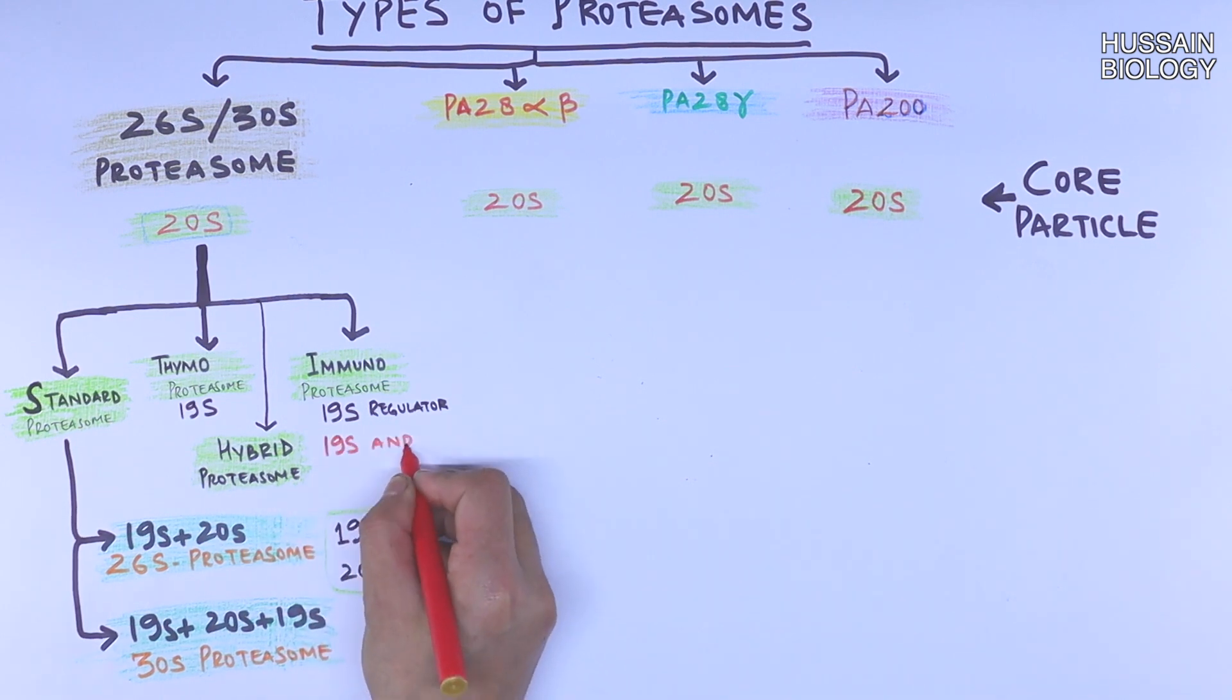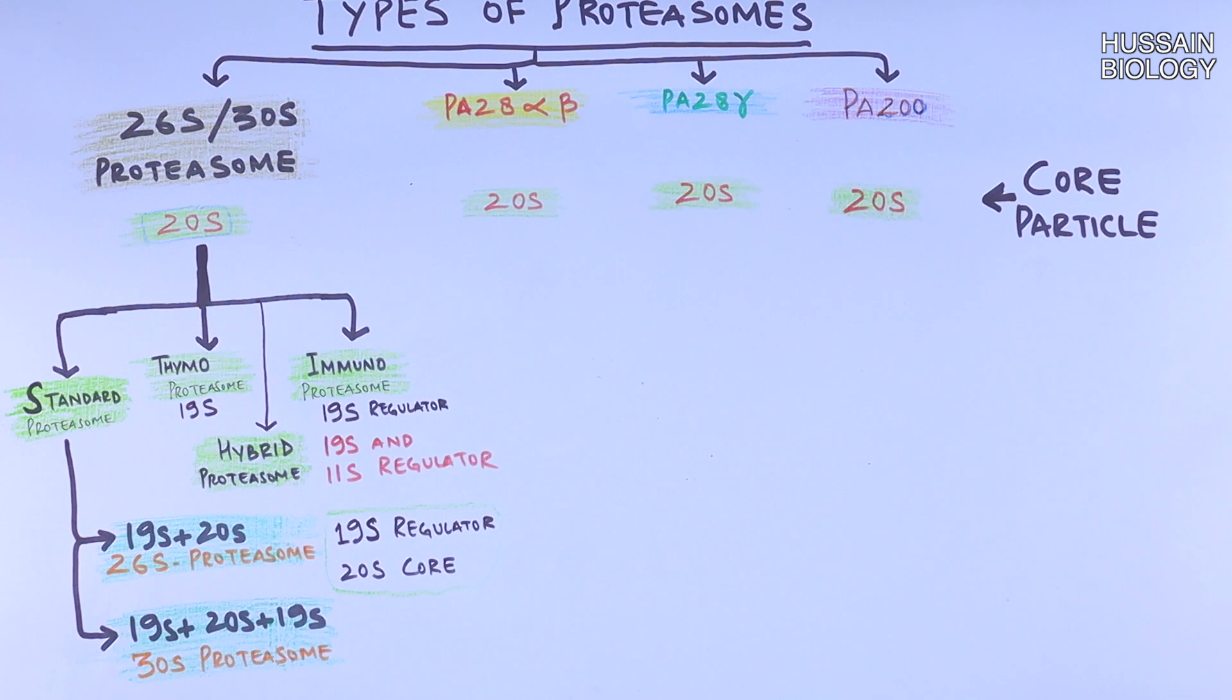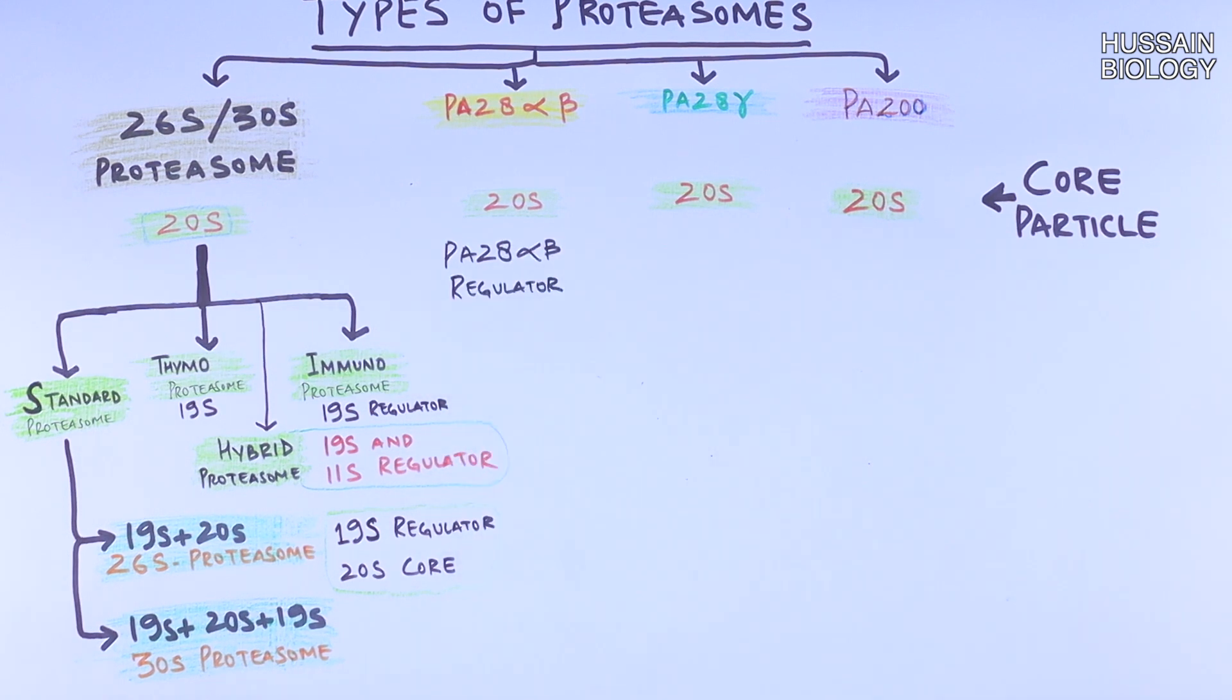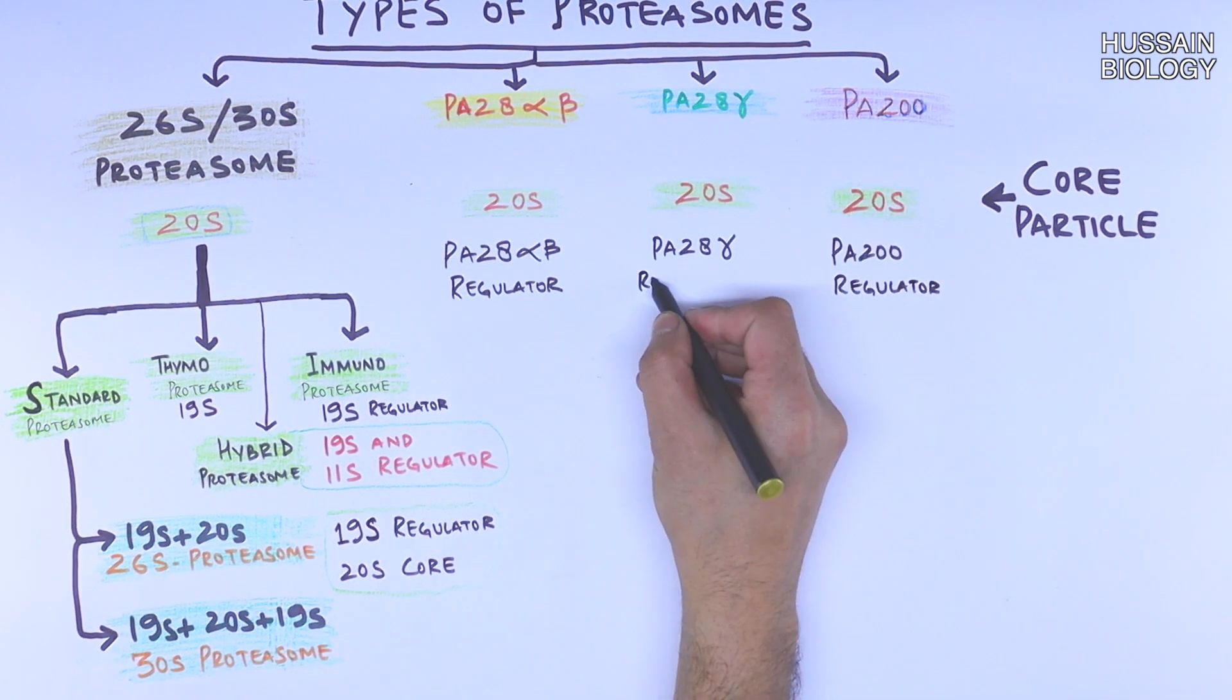Now moving forward, the PA28 alpha beta has got PA28 alpha beta as regulatory molecule. For PA28 gamma we have PA28 gamma as regulatory molecule, and for PA200 we have got PA200 as regulatory molecule. So this makes up the types of proteasome with different regulatory molecules but same 20S core.